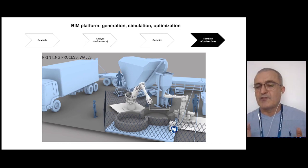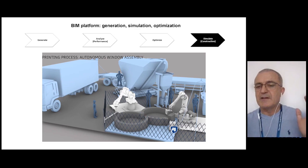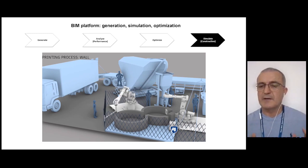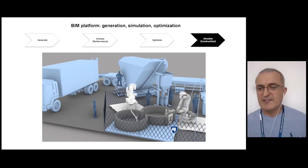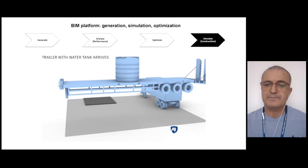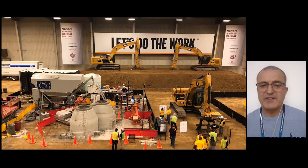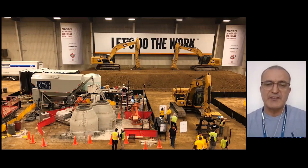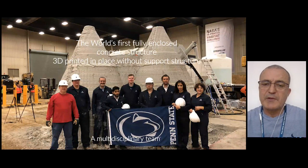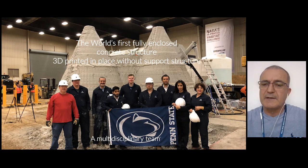One of the biggest challenges was to guarantee placing window frames during printing and having a completely autonomous construction process. You see the last window frame being placed — note this was printed at one-third scale. The image shows the actual setup when printing was almost finished, very similar to what we had simulated. Thanks to this technology, we were able to print in place the first fully printed structure, including the foundation, walls, and roofing system.